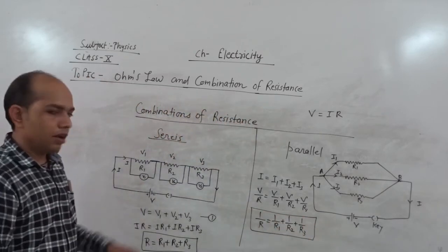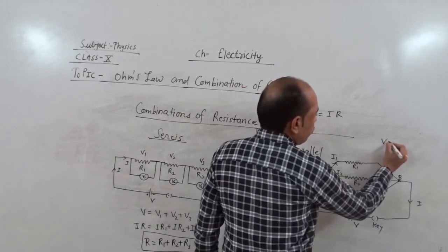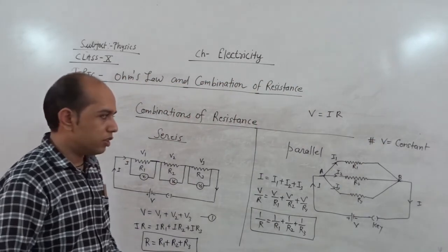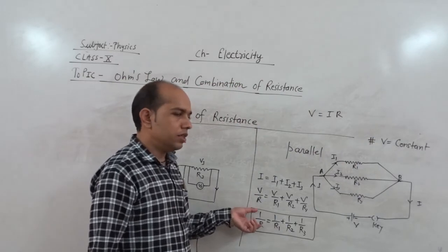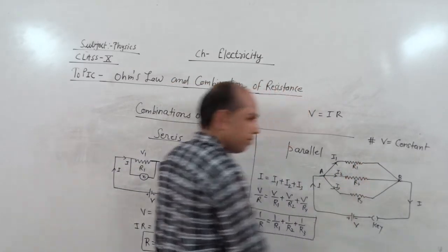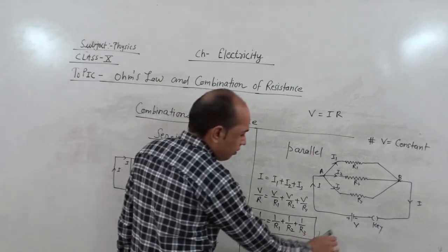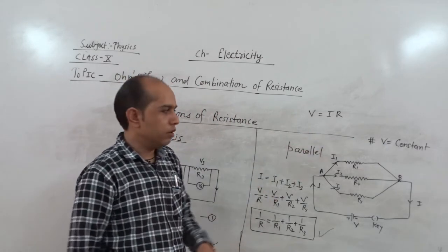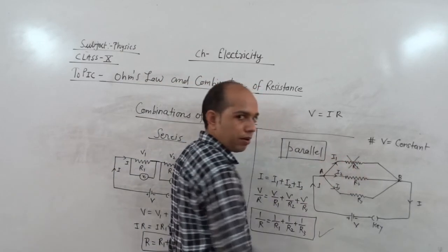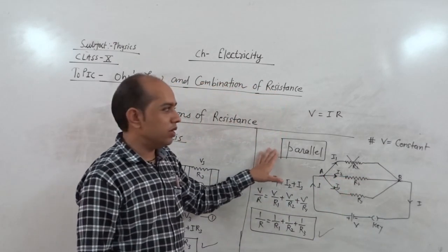We can draw two conclusions for parallel combination. First, the current is split, meaning voltage V is constant — the potential difference is constant across all branches during parallel combination. Second, the net resistance is given by the sum of reciprocals of individual resistances. Comparing series and parallel, series resistance is greater than parallel resistance. For household purposes, we use parallel combination, because if one appliance breaks, the rest remain in working condition. That is why we always use parallel combination in household wiring. Thank you.